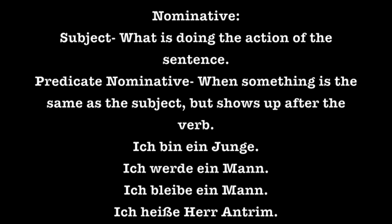Ich bleibe ein Mann — I remain a man. Ich is still the subject in this sentence, and ein Mann is again a predicate nominative. Ich heiße Herr Antrim — I am called Mr. Antrim. Ich is again the subject, and Herr Antrim is a predicate nominative. Heißen will also not take an accusative. In all of these sentences, the thing before the verb and the thing after the verb are all the same thing, which means they are both in the nominative case. One of them is a subject, and the other one is a predicate nominative.